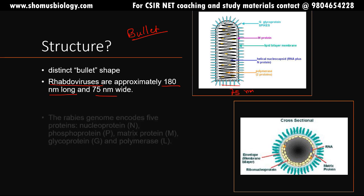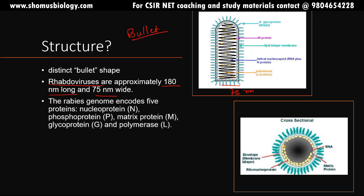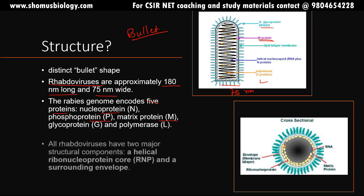The rabies virus contains five different types of proteins: N for nucleoprotein, P for phosphoprotein, M for matrix protein, G for glycoprotein or spikes, and L is the polymerase that is present inside the virus. It carries its own polymerase.